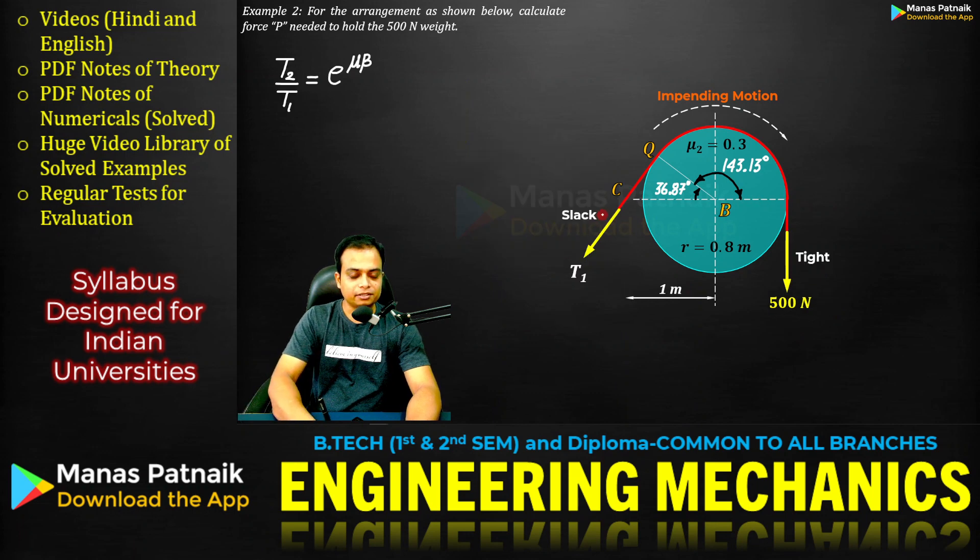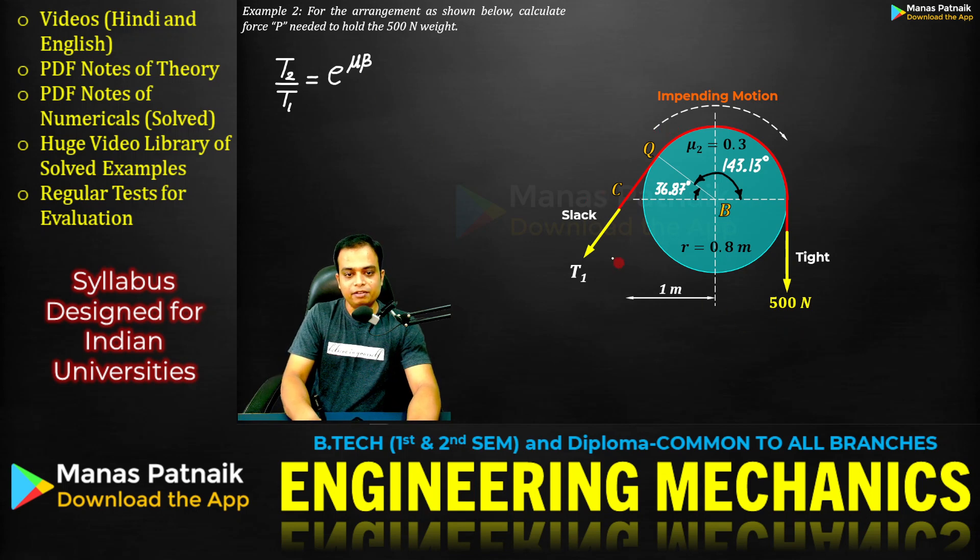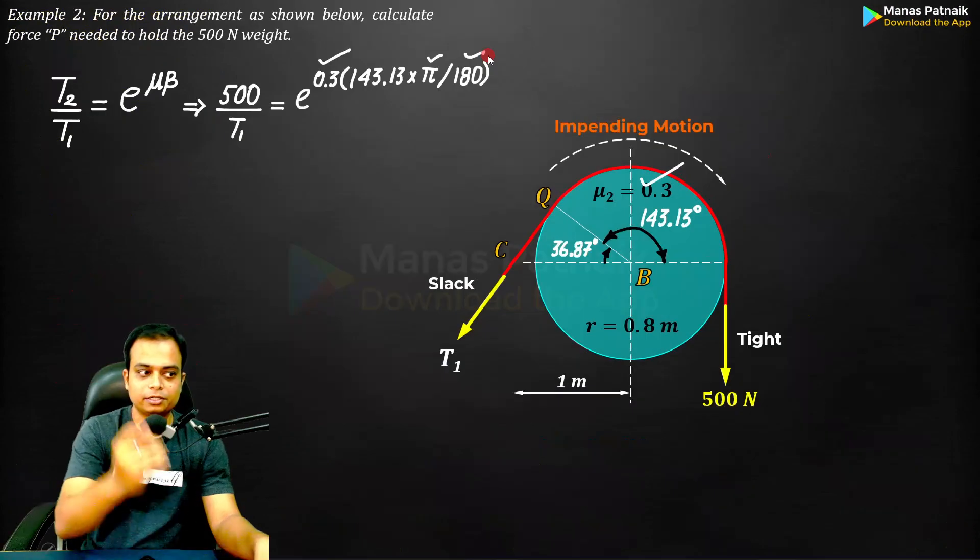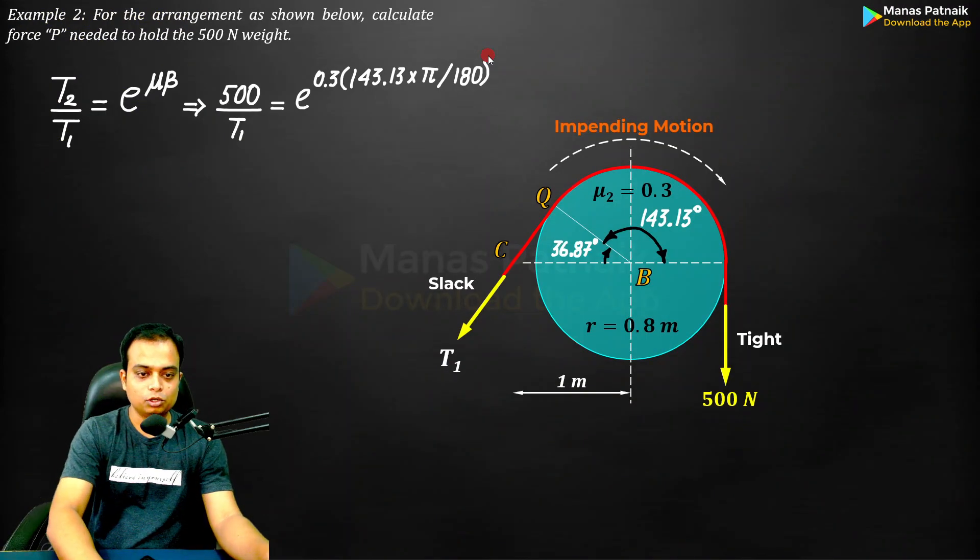This is the tighter side, this is the slacker side. Arrowhead tighter side, arrow tail slacker side. 500 by T1 equals e^(μβ), where μ is 0.3 and beta is 143.13. You need to always do the conversion to radians, so times π/180. Do the math, this is what you get.